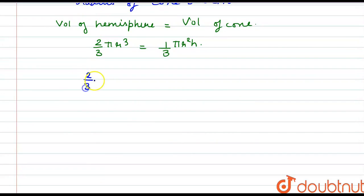we get 2 by 3 into pi into 8 cube is equal to 1 by 3 into pi into 6 square h. So pi by 3 gets cancelled out from both sides.